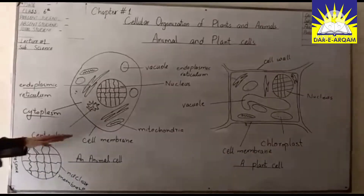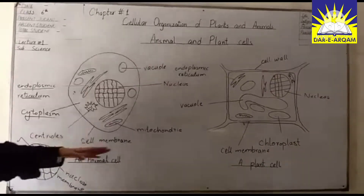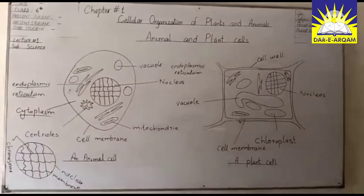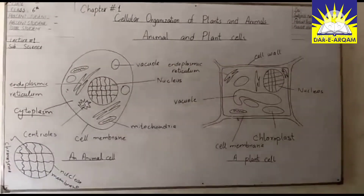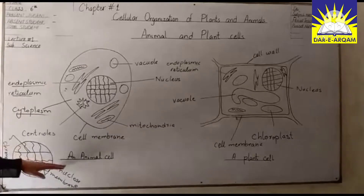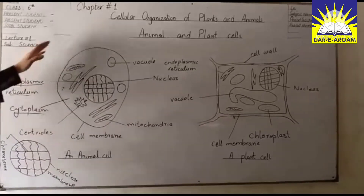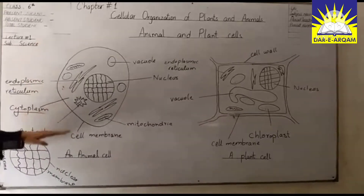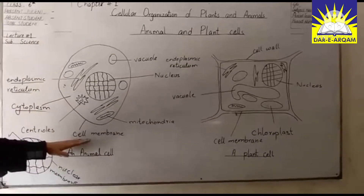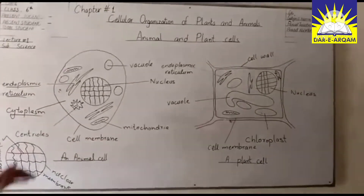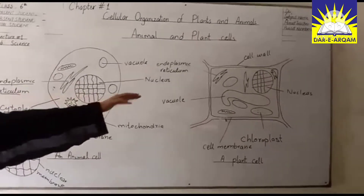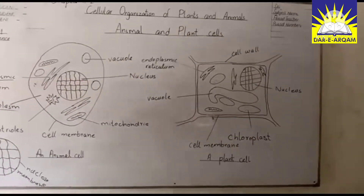This one is an animal cell and that one is a plant cell. In animal cells, the outermost covering is known as a cell membrane. In plant cells, the outermost covering is known as a cell wall.